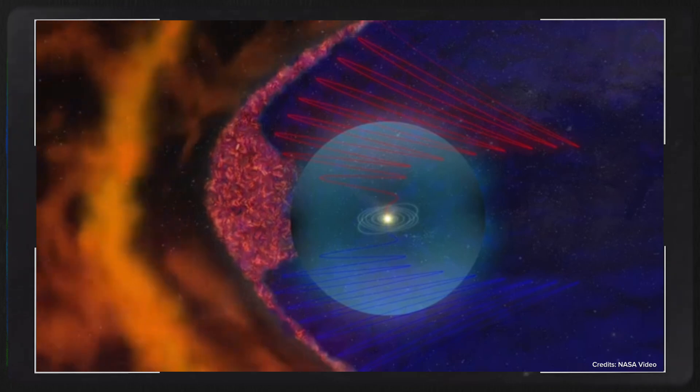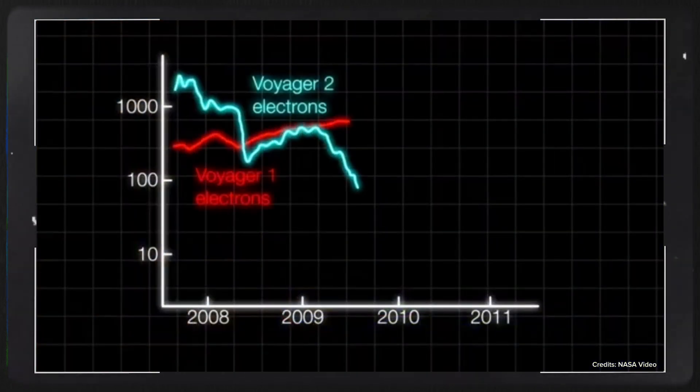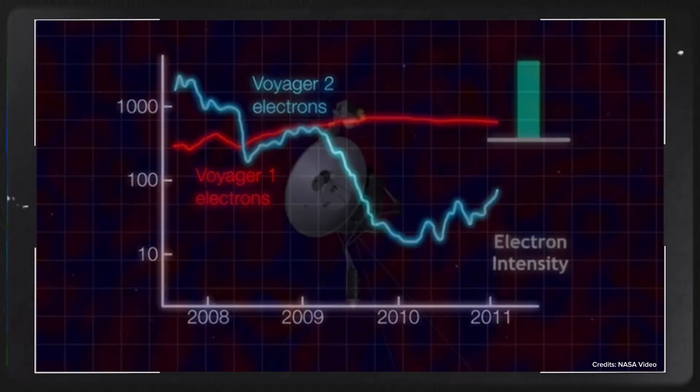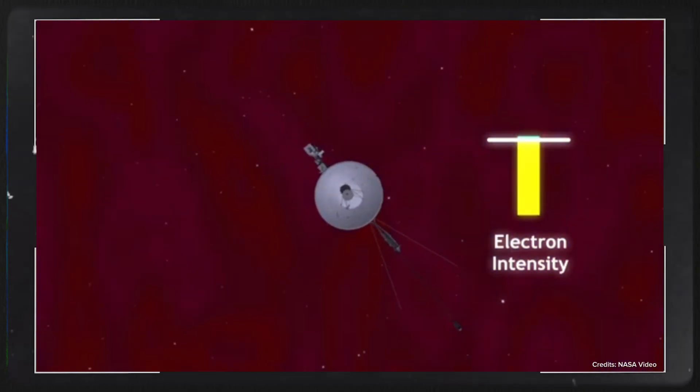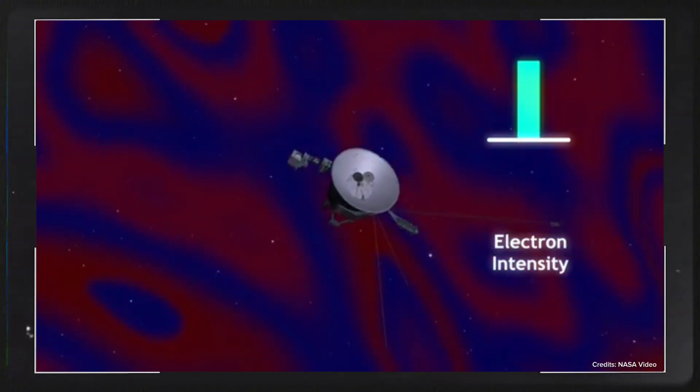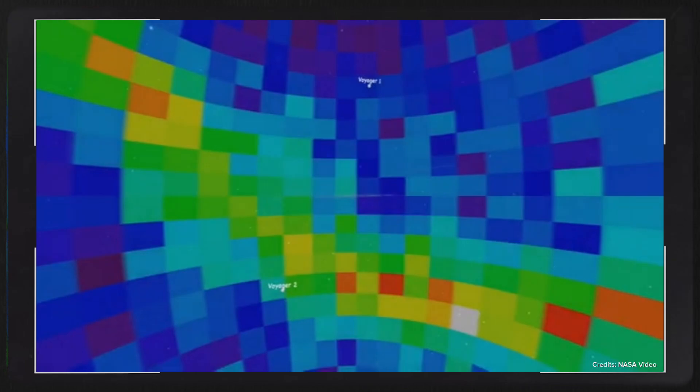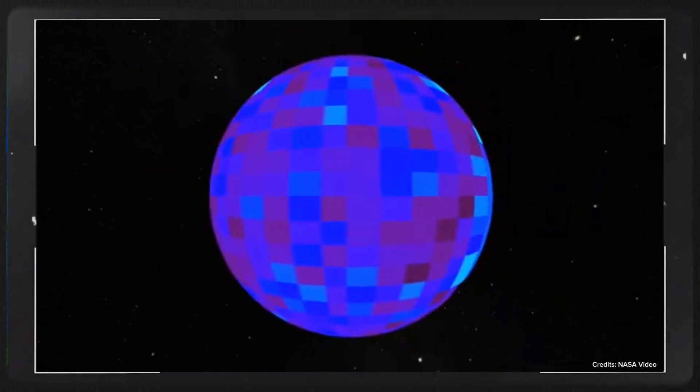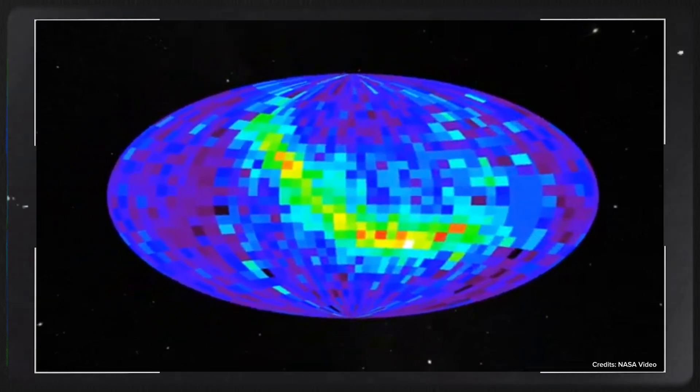Thanks to data collected by the Voyager probes, we now know that the heliosphere extends approximately 18 billion kilometers from the sun into space, and at its outermost boundary, called the heliopause, interstellar space finally begins. Before Voyager 1 made its groundbreaking entry into this threshold of the solar system, knowledge about this region was virtually non-existent. The data transmitted back to Earth from the probes left researchers in a state of astonishment and confusion, as many of their previous predictions were proven incorrect.